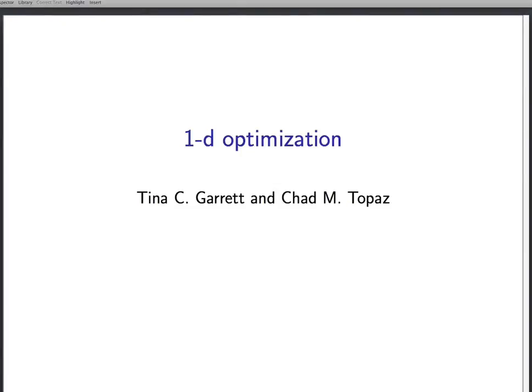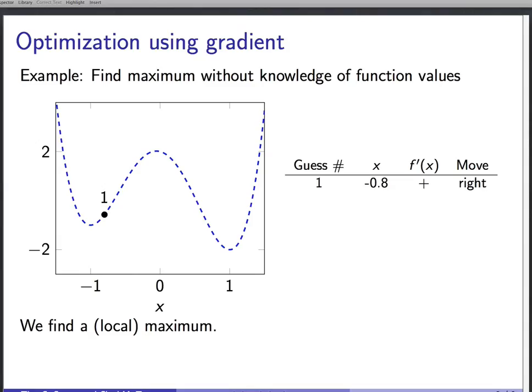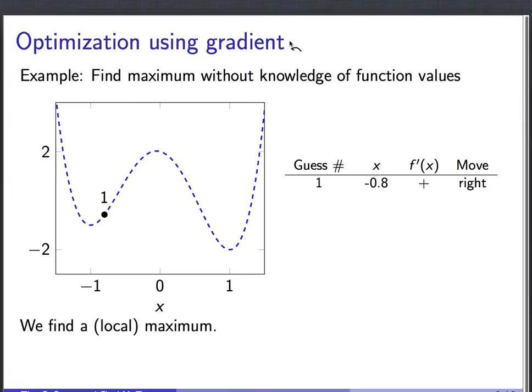This lesson is on optimization of functions of a single variable. Some of this mirrors what's in the textbook, and some of it does not. I want to start out talking about something not really emphasized in the textbook: optimization as what's known as a gradient climbing procedure. For a 1D function, you can think of the gradient as just being a synonym for the derivative.